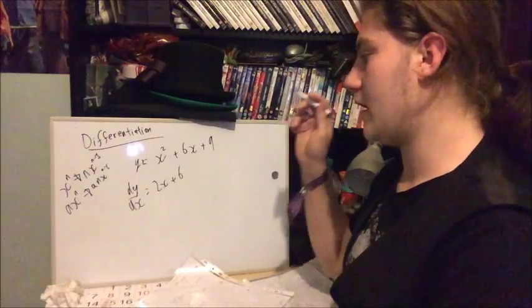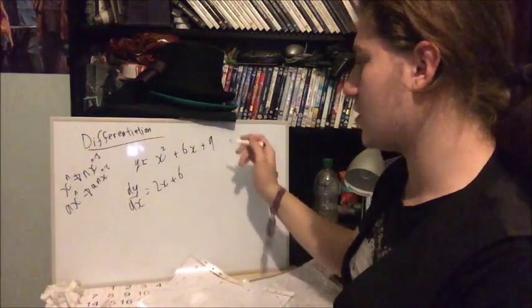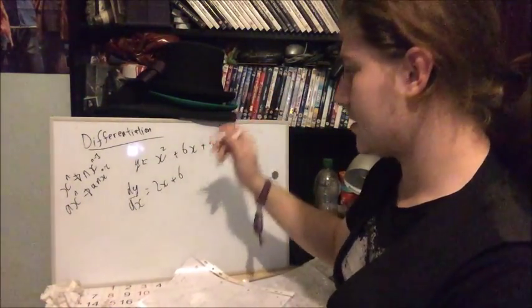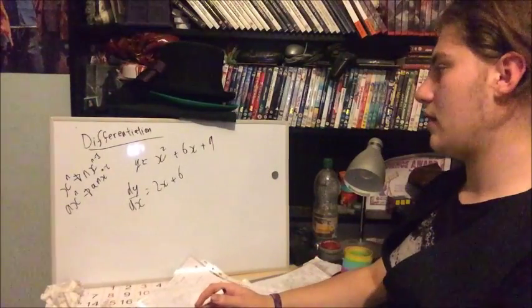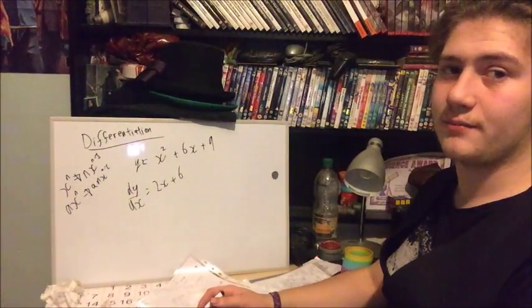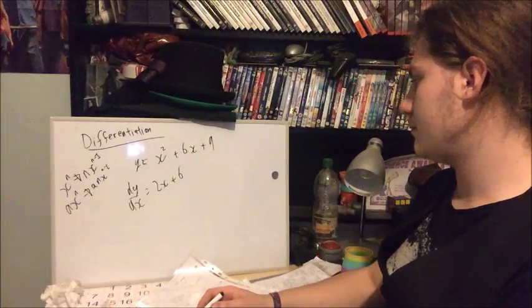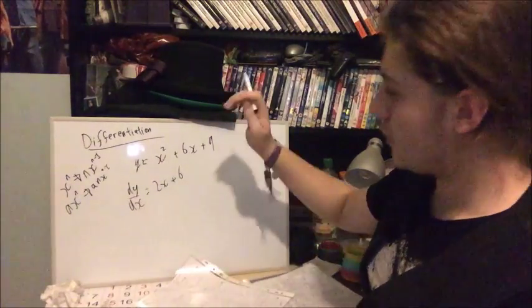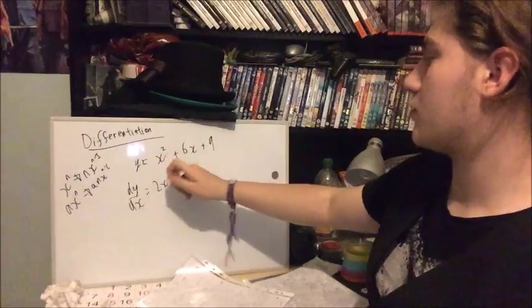Now x to the power of zero is one, so 6 times by one is just 6. And as for nine, well that just disappears entirely, bye bye nine. And so the first derivative of y equals x squared plus 6x plus 9 equals 2x plus 6.